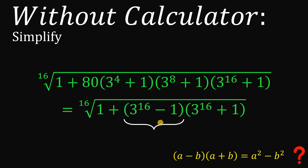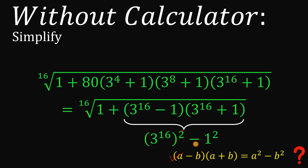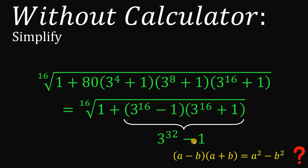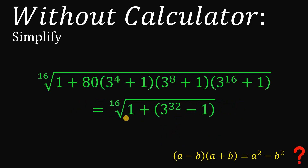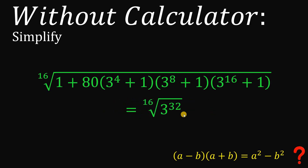Finally, let's focus on the last product. Again, using the same identity, (3 raised to the 16th power minus 1) times (3 raised to the 16th power plus 1) equals (3 raised to the 16th power) squared minus 1 squared. Simplifying, we get 3 raised to the power of 32 minus 1. Notice that inside the radical sign we now have positive 1 and negative 1, which cancel to 0. So the expression inside the radical sign becomes 3 raised to the power of 32.